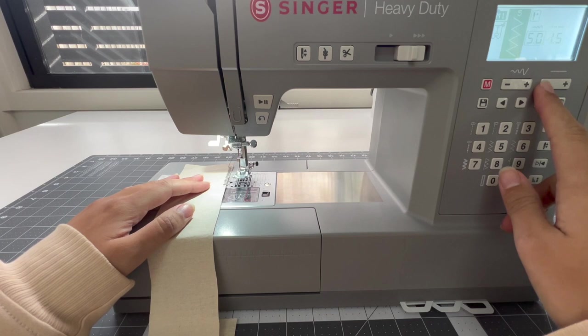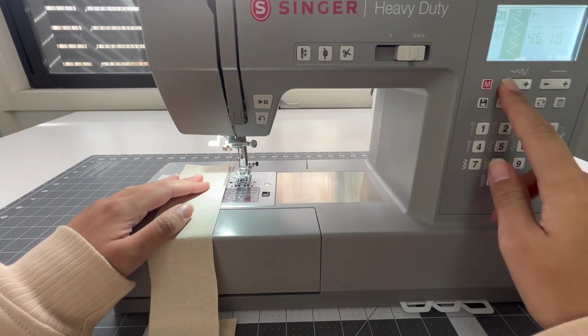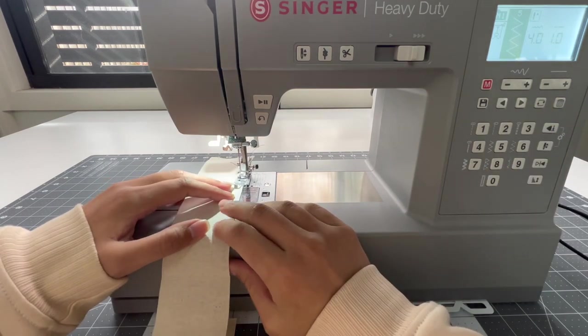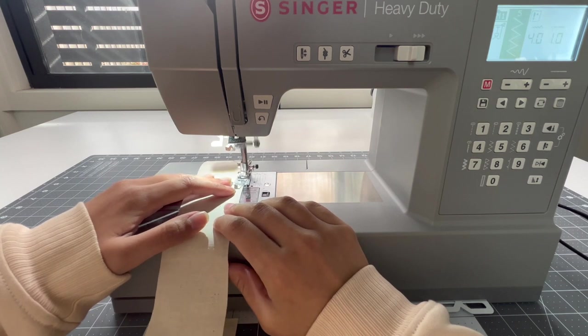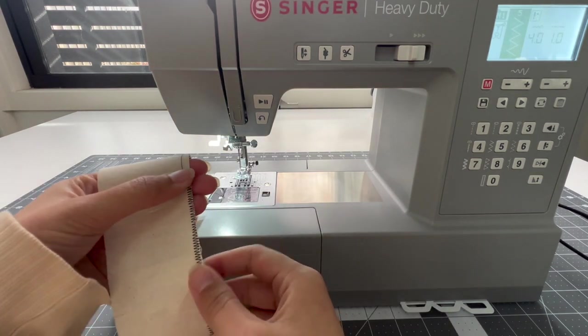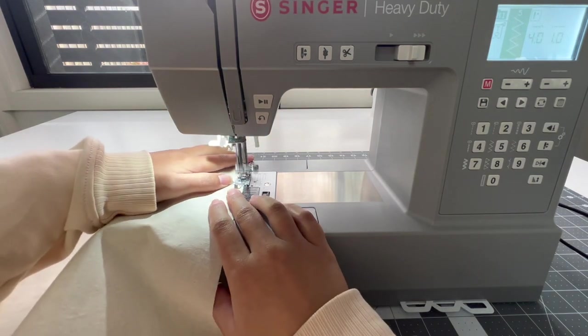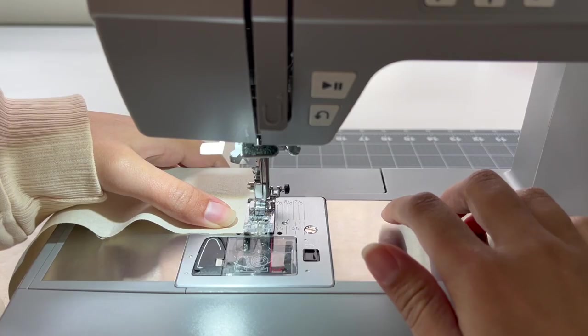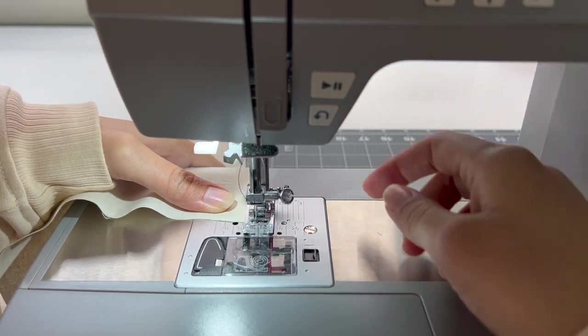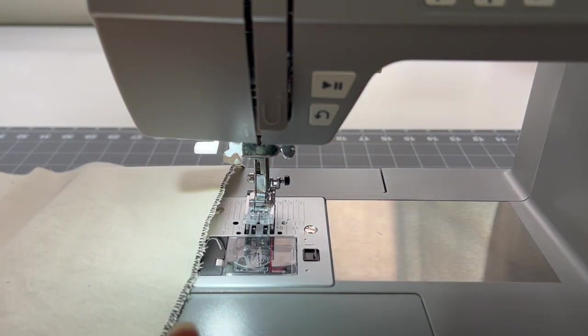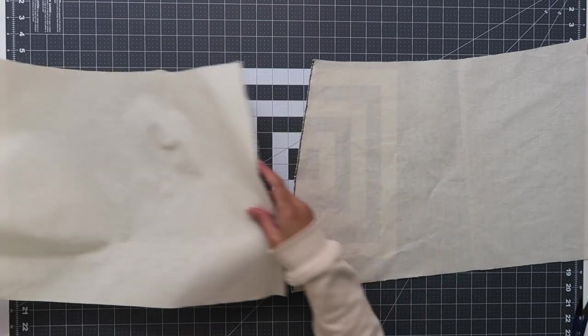So here I am just sampling on some scrap fabric what kind of zigzag stitch width and tension I would like and this is what I landed on. I recommend you mini practice as well before you actually do it to your proper panels. So from there I picked what I liked and then I did a zigzag stitch on all four of the panels on the left and right sides and this is what you'll be left with.